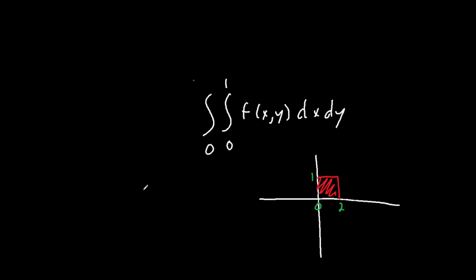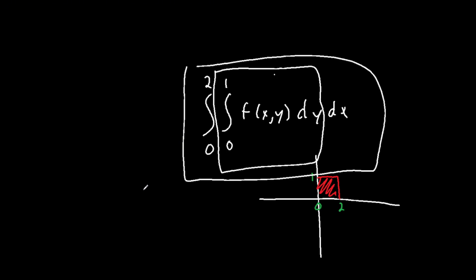Your integral would look like this, with dy first. The reason is because your first integral, the one closest to the function, has the bounds of dy or dx closest to the function. This section here is closed off, and once you solve for this integral, you can solve for the entire integral.